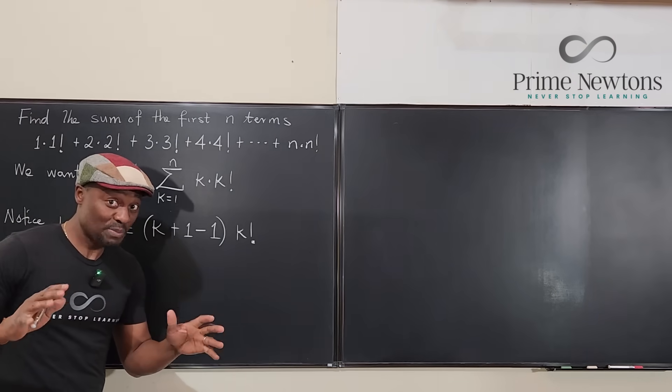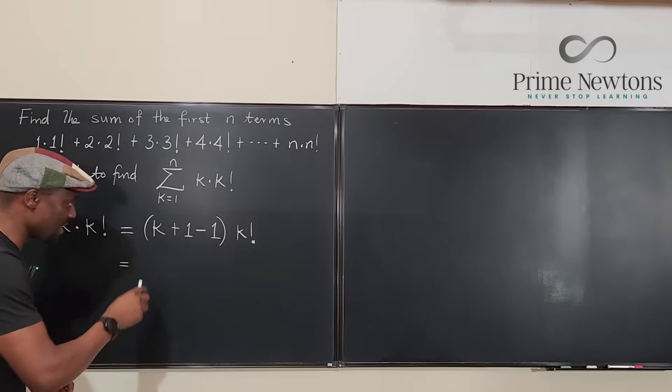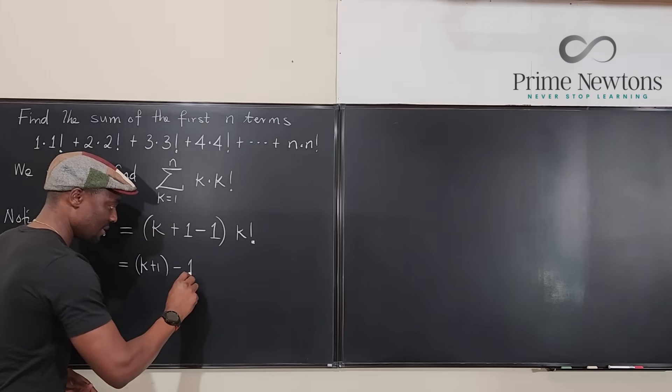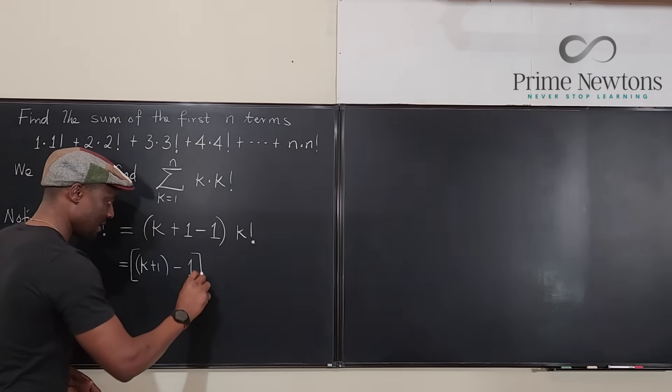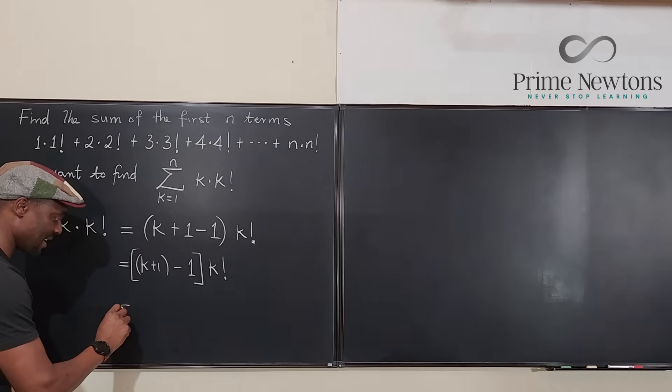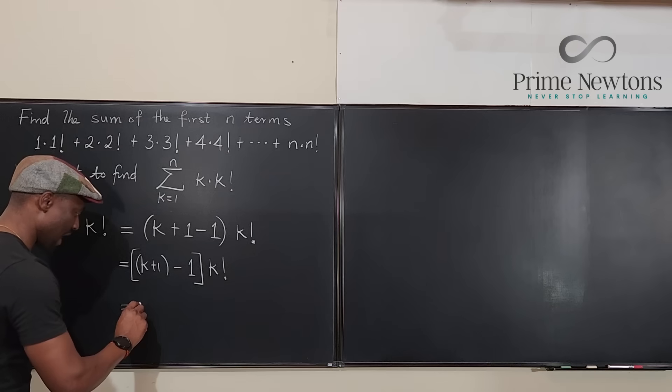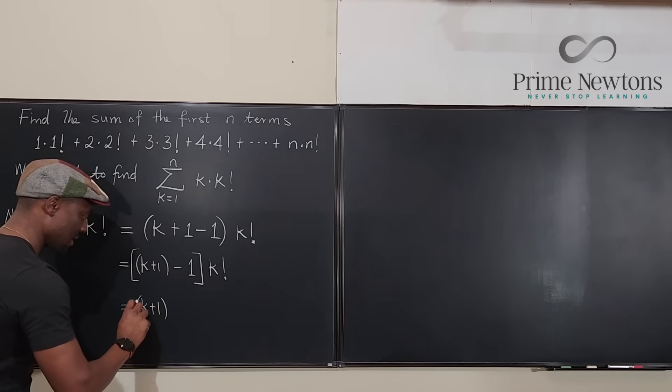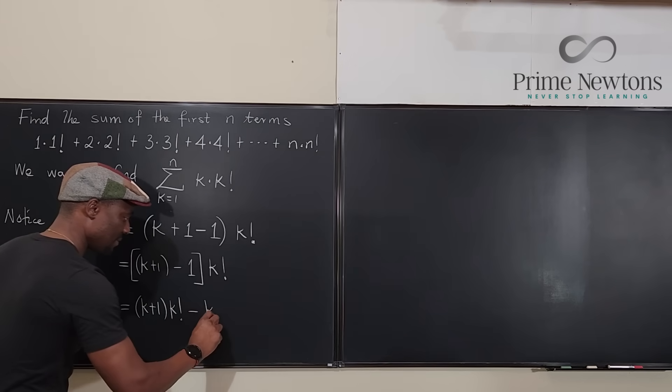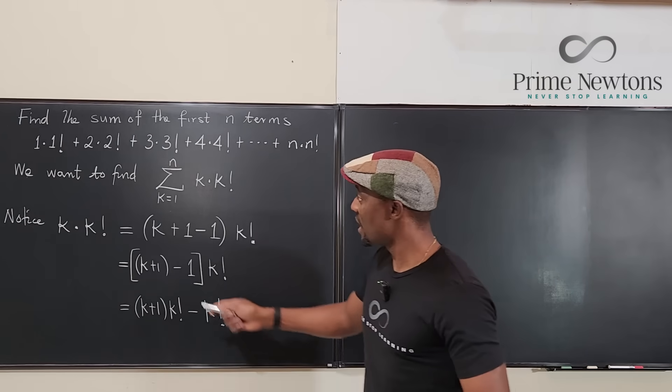So remember that the whole purpose of this is so that we can have a minus sign, then we can have a telescoping series. So here we can write this as k plus one minus one times k factorial. So that when you distribute this, you're going to have k plus one times k factorial minus one times k factorial.